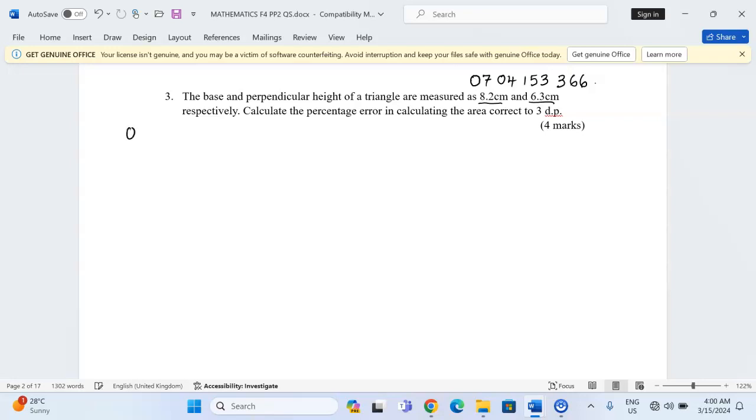Then we'll pick the accuracy 0.1 and divide it by two. This gives us an absolute error of 0.05. This is the absolute error in the recording of the dimensions, both the base and the perpendicular height.